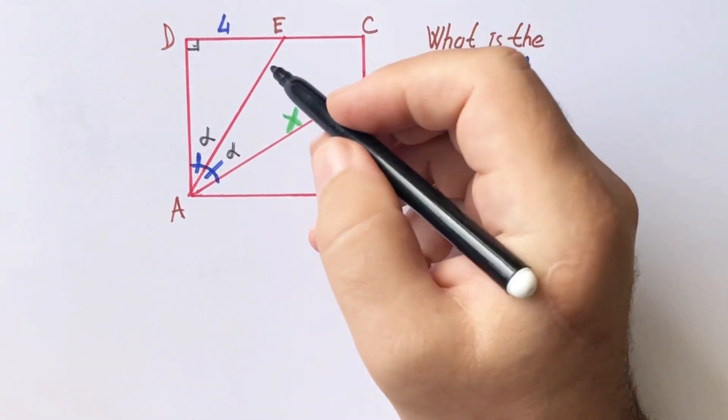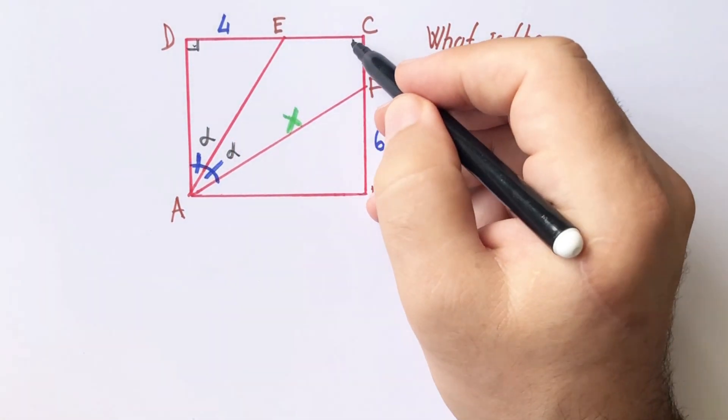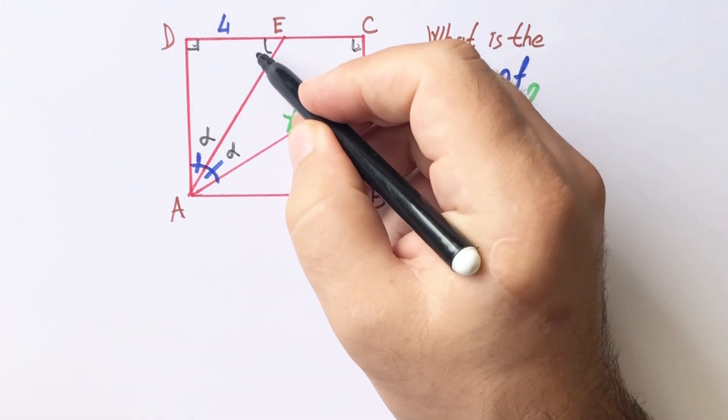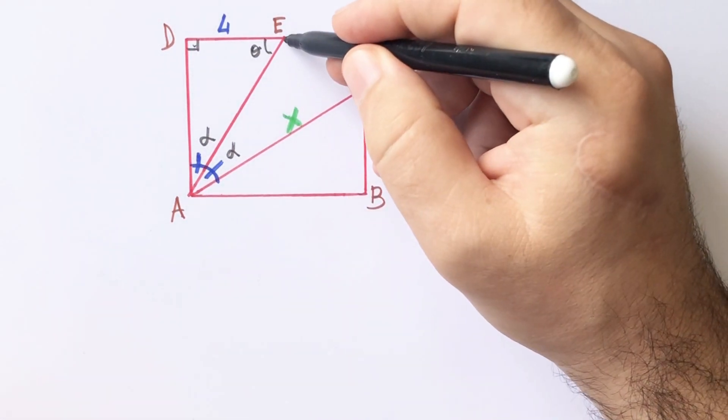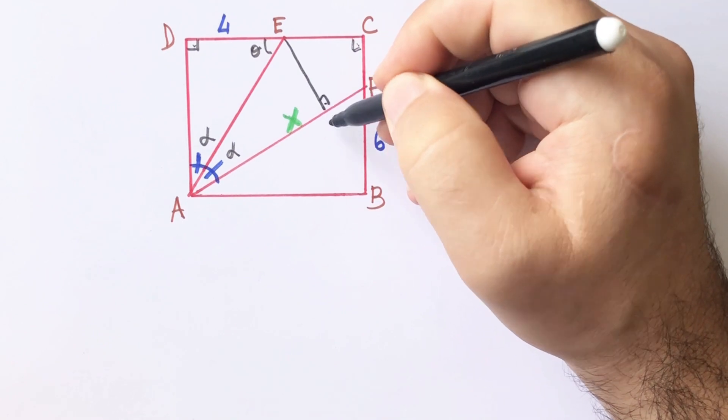This angle must be 90 degrees because of the square. Let's call here theta. If we draw a perpendicular line.